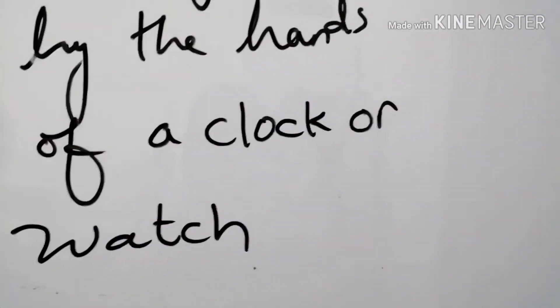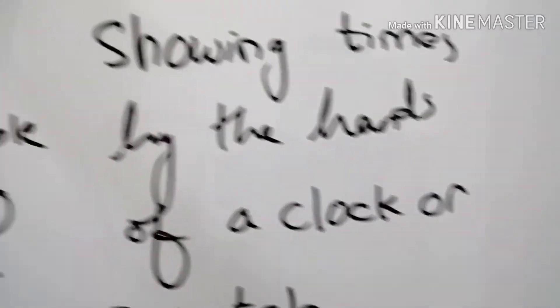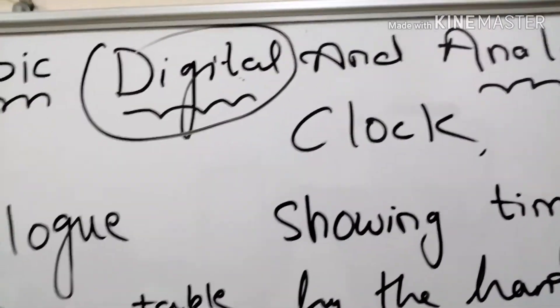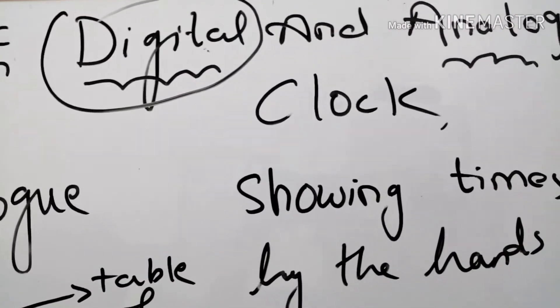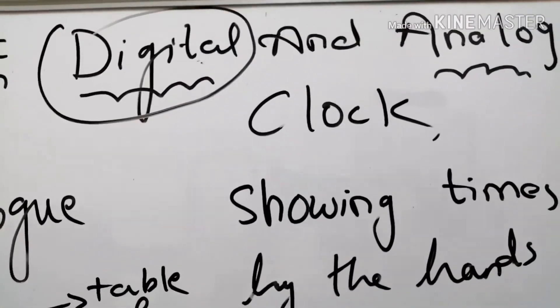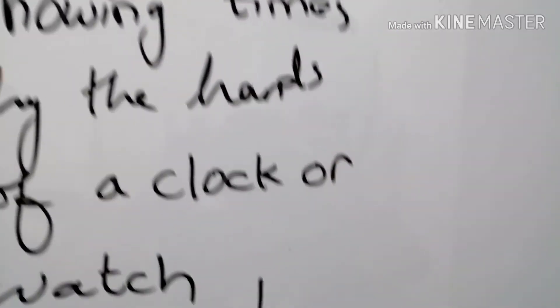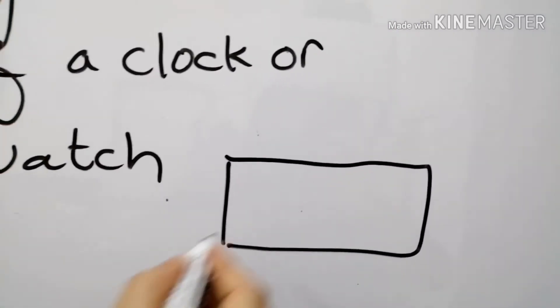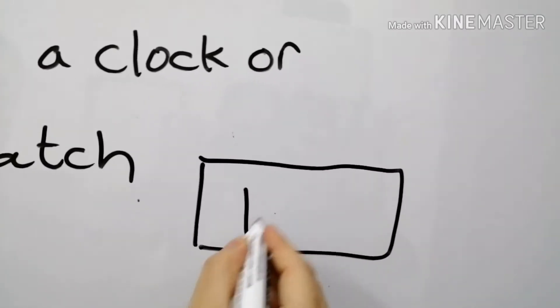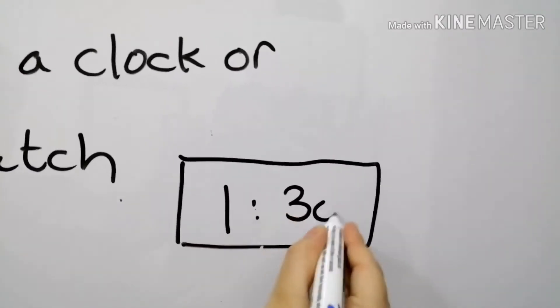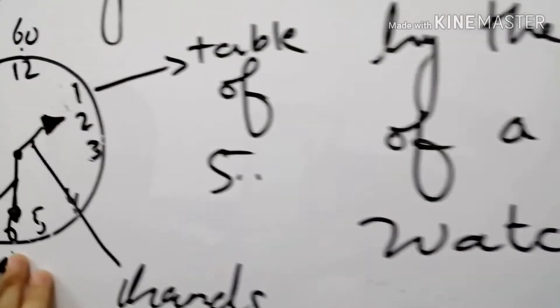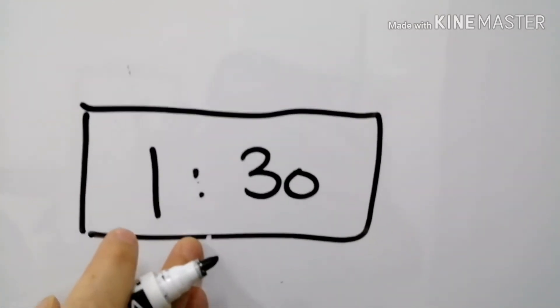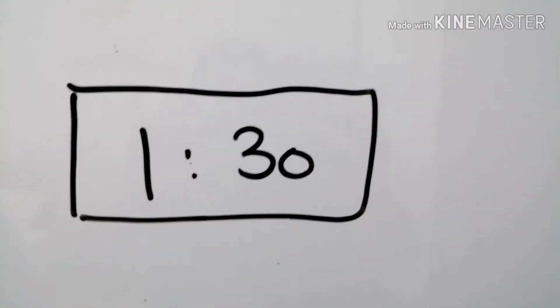Now on the other hand if we see the other topic that is digital. The topic is digital and analog clock. So the digital clock will be like this. 1, 30. The analog clock shows time in this way but the digital clock will show the time in this way.